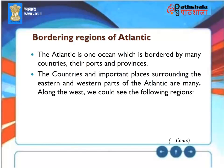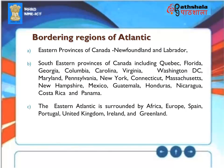The Atlantic is bordered by many countries, ports, and provinces. Along the west, we can see the Eastern Provinces of Canada including Newfoundland and Labrador, and the Southeastern Provinces of Canada. On the eastern side are European nations including Spain, Portugal, the United Kingdom, Ireland, and Greenland.